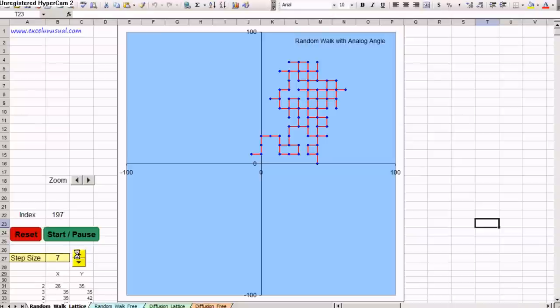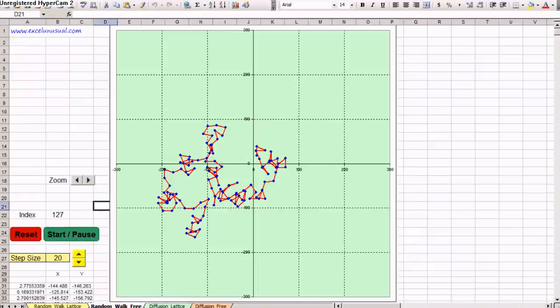We can adjust the step size here. Let's make it smaller and you can see the particle is still going around. Let's stop this and go to the next worksheet.